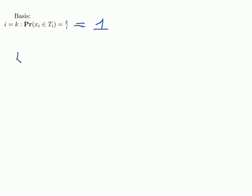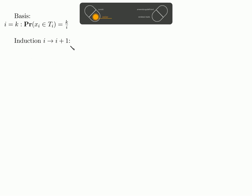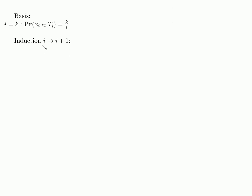We could have also chosen i to be 1 here, so we could have shown the basis to be true just for the very first time step — this also would have been okay. Now the induction is over i. We have shown that in the i-th time step this works. Now we want to show that in the next time step it still works out nicely.